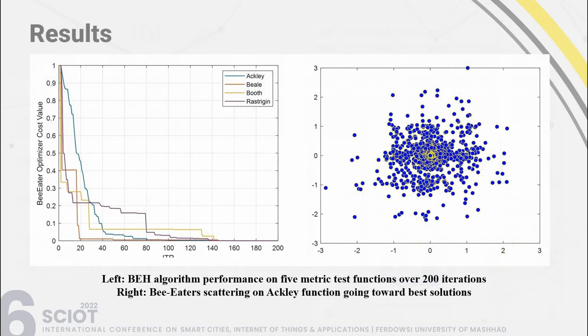On the left, the performance of the algorithm on these four functions is shown. The BEHA algorithm has faster convergence. On the right, each blue dot is a bee eater performing on the Ackley function, moving toward their prey. Some are faster and some slower; those who are faster and performing better are at the center.